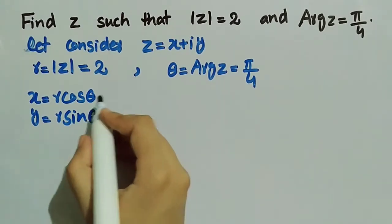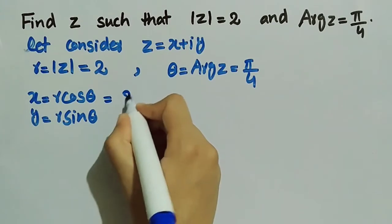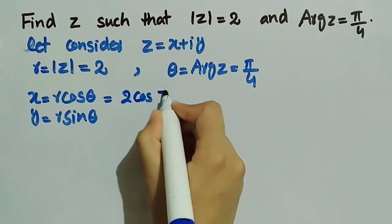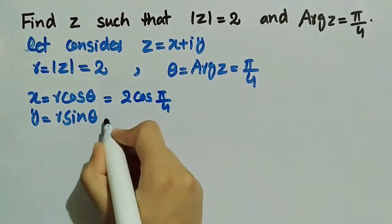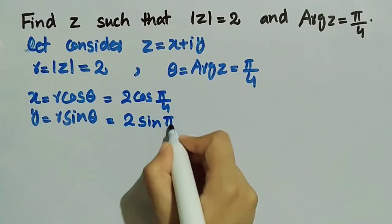Now we will substitute the value of θ and r. x will become 2 cos π/4 and y will become 2 sin π/4.